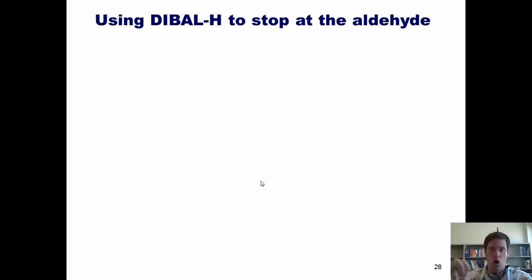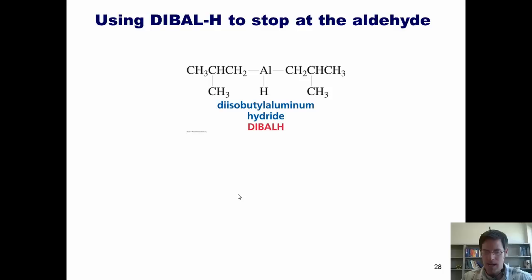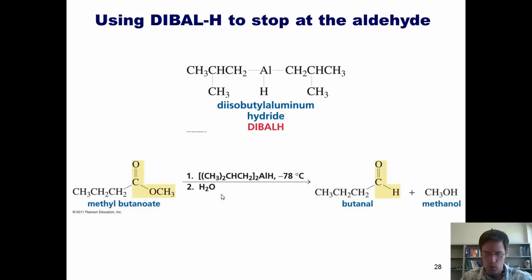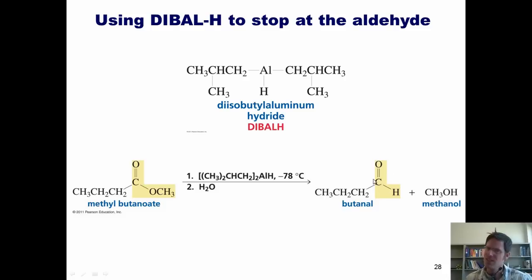What if I have an ester and I only want to reduce it to an aldehyde instead of going all the way to a primary alcohol? I use diisobutylaluminum hydride, commonly referred to as DIBAL or DIBAL-H. When I stir an ester at negative 78 degrees Celsius with DIBAL, I can selectively reduce it down to an aldehyde and stop there rather than going all the way to an alcohol.